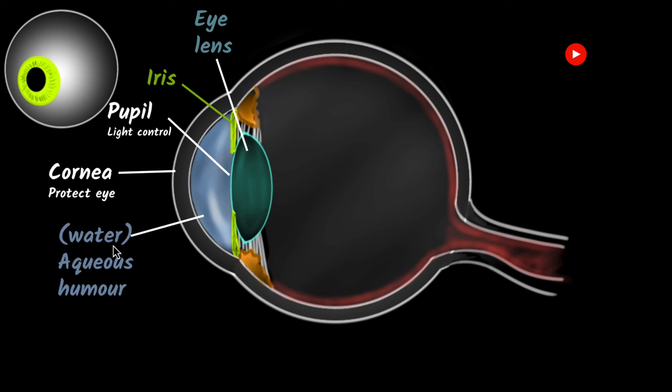And if you now consider the cornea along with the aqueous humor, that also helps in focusing light. So both the cornea along with the aqueous humor, and the eye lens, they together act like the converging lens system of our eyes. And their main job is to focus whatever light is coming onto the back part of the eye.